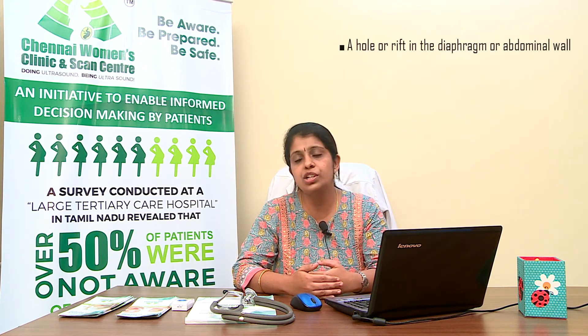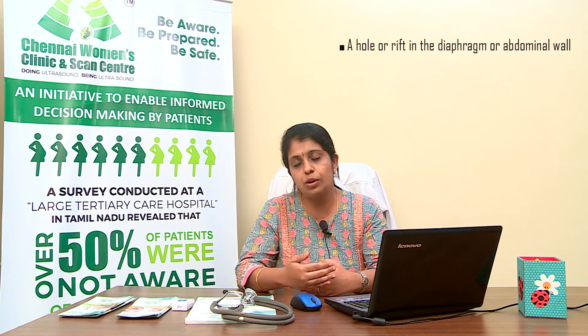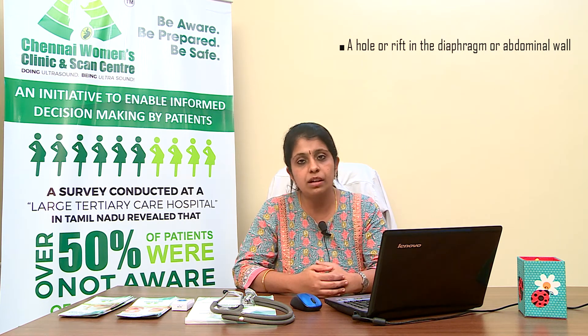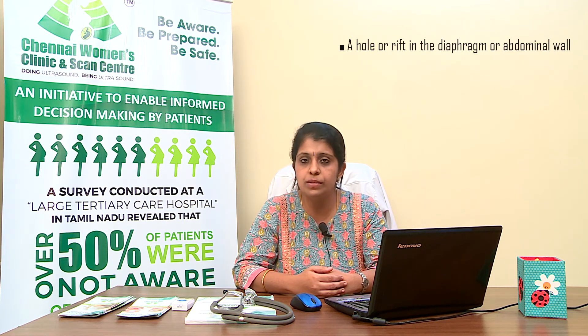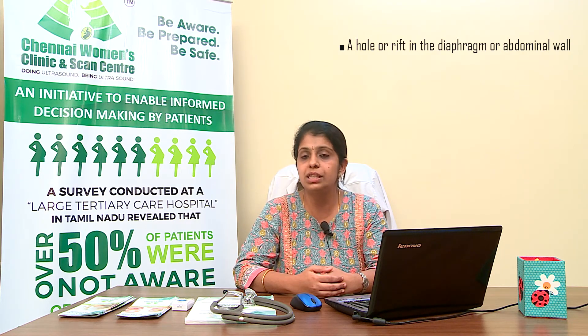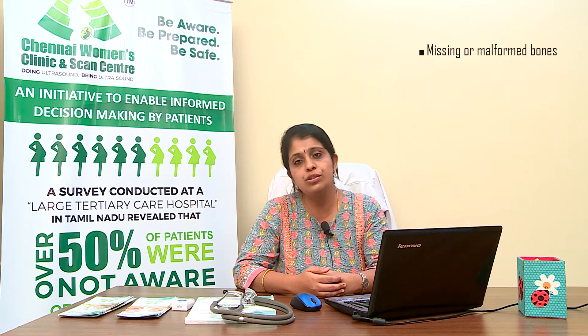Coming down to the diaphragm — the sheet which connects the chest, that is the thorax, to the abdomen of the baby — if there are any holes or rifts in the diaphragm, or any hole or rift in the abdominal wall, these are identified. Whether one or two kidneys are present, or if one kidney is missing or malformed, is checked. The bone structure and echogenicity — that is the visualization of the bone — and whether the legs and hands are closing, opening, flexing, and extending — everything is seen in an anomaly scan.